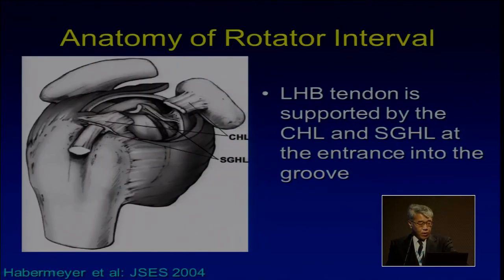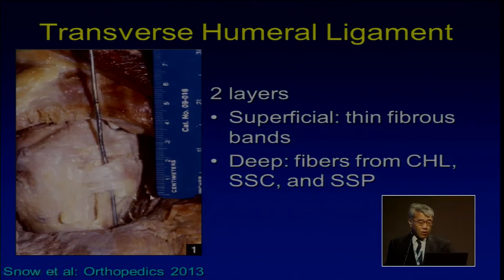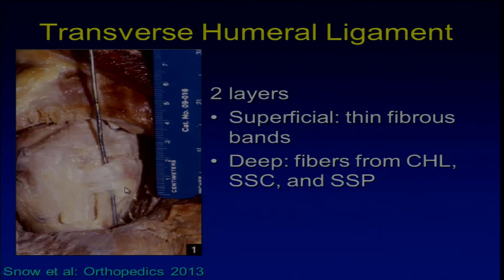When the long head of the biceps tendon enters into the bicipital groove, this part is stabilized by the coracohumeral ligament and the SGHL. Also the long head of the biceps is stabilized by the transverse humeral ligament. But in most cases with complete dislocation of the long head of the biceps, this ligament is still intact, so it does not function as the stabilizer.